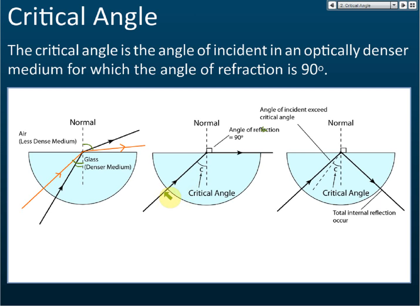If we keep increasing the angle of incidence beyond the critical angle, there is no more refraction. Instead, 100% of the light ray will be reflected. We call this total internal reflection. When the angle of incidence exceeds the critical angle, total internal reflection occurs. So those are the definitions of critical angle and total internal reflection.